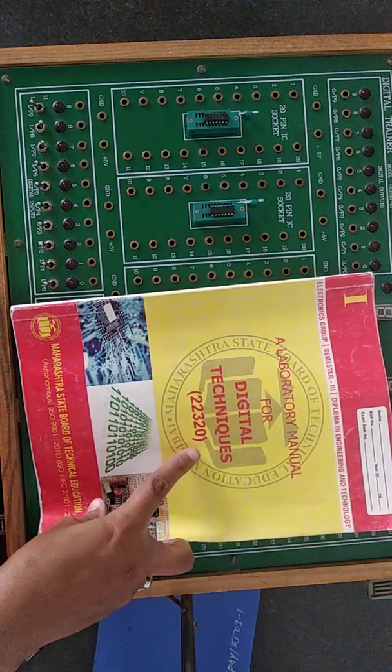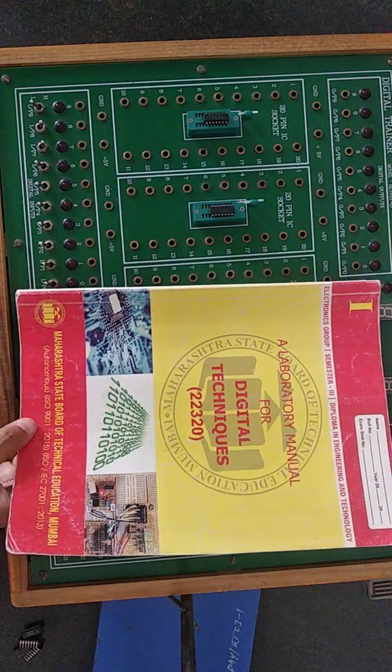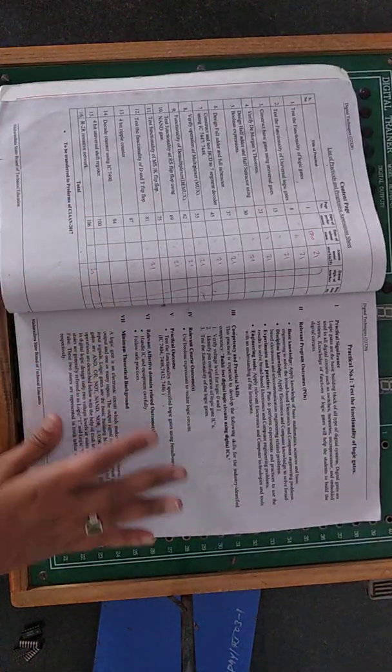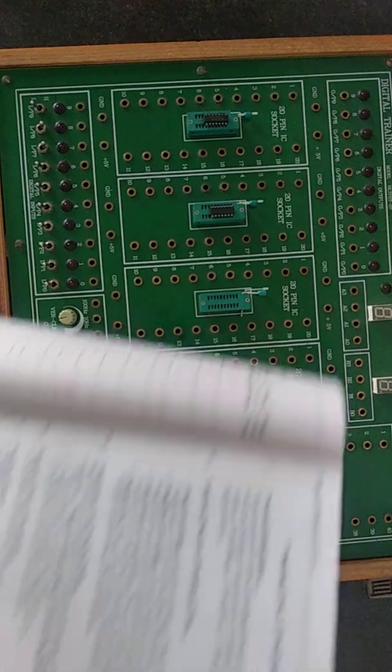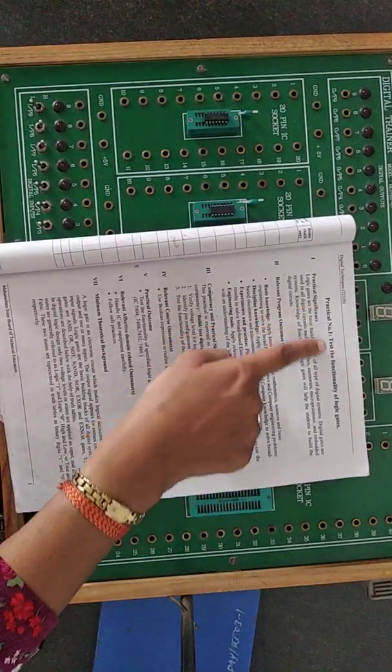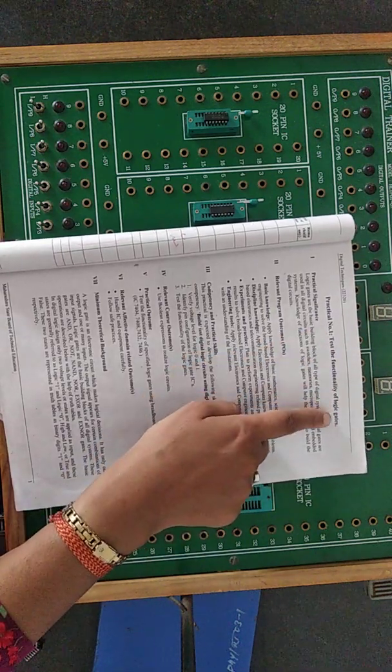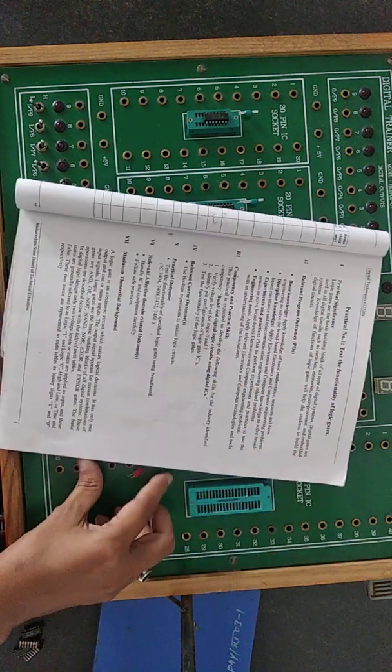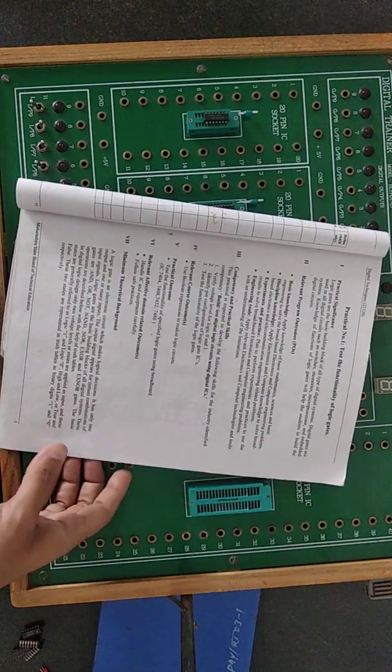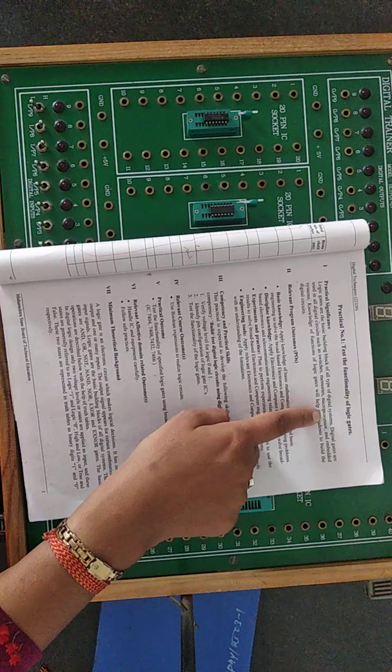The subject code is 22320, so you will get the soft copy of this manual on MSBT website. Download it and refer to this copy. So let us start the first practical: test the functionality of logic gates.